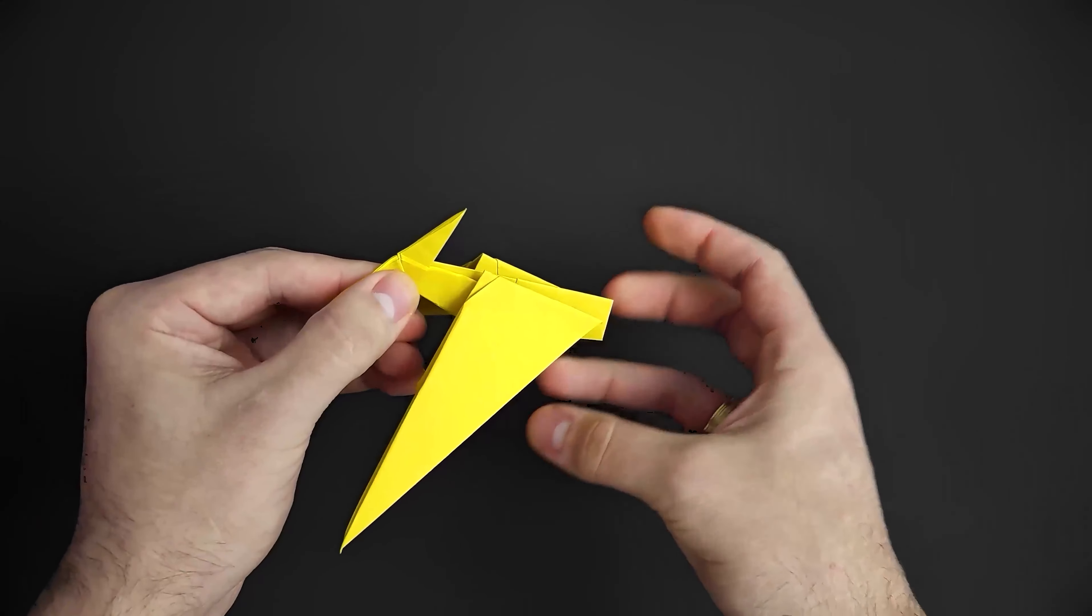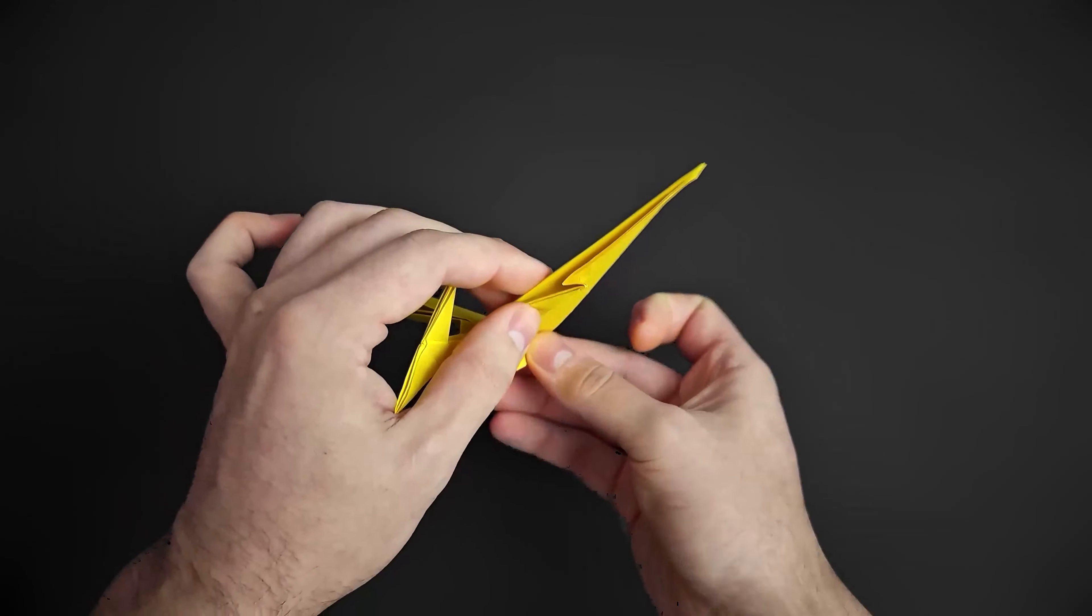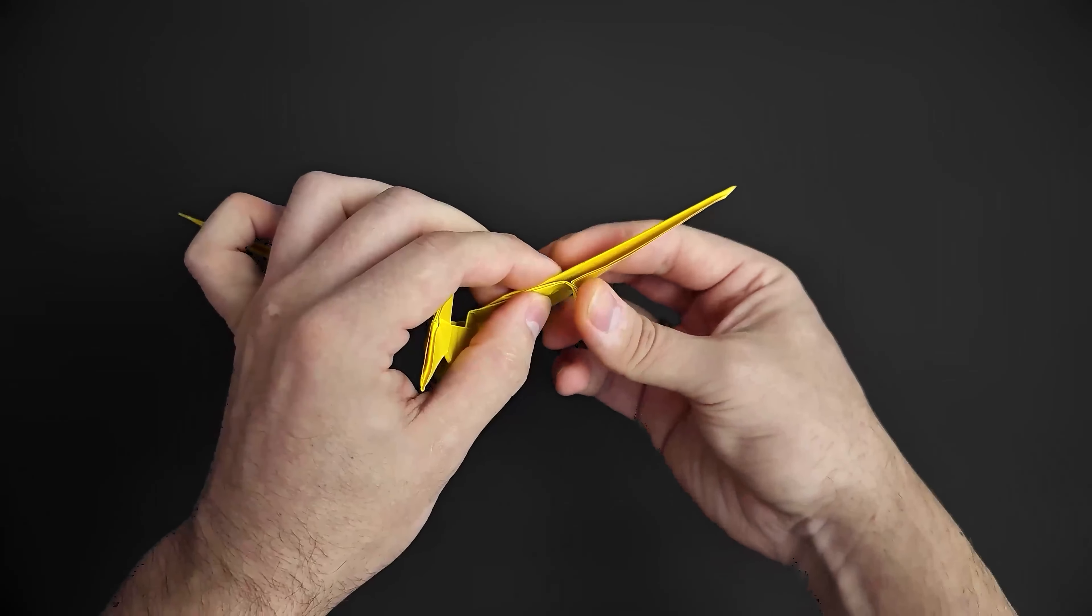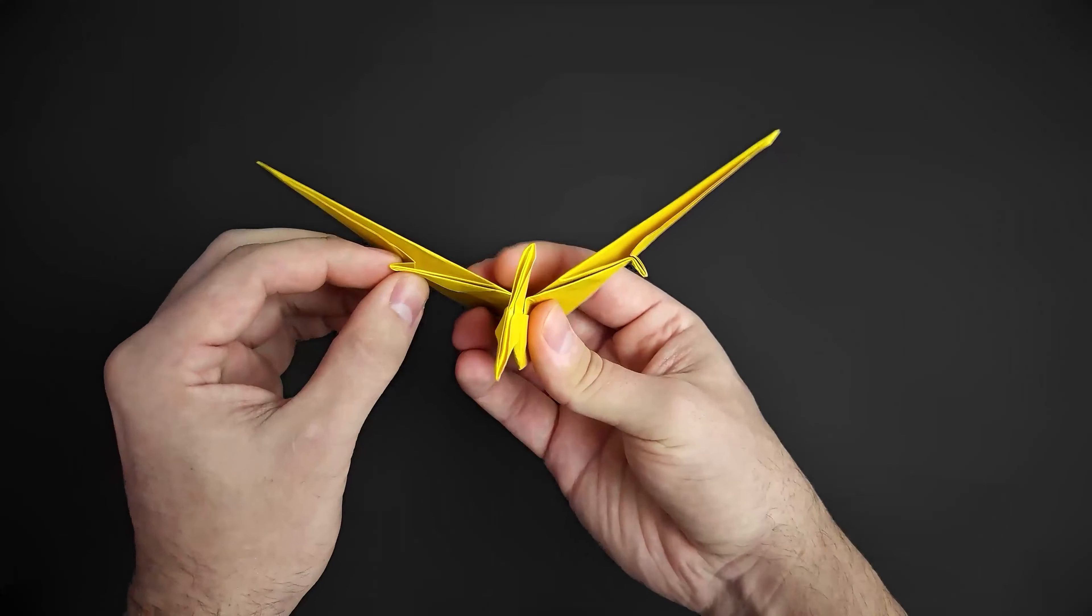Bring the wings back up and then fold these little flaps that we left in the middle. And now our origami is done.